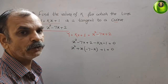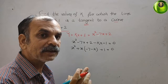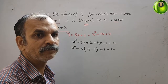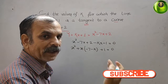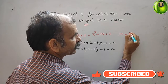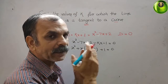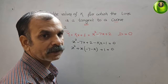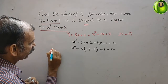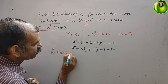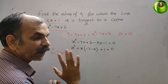Since this is a tangent, it touches the curve at a single point. That means when we solve this as a quadratic, there is exactly one solution — so the discriminant equals zero. The discriminant is b² - 4ac = 0.